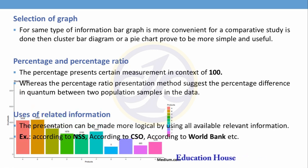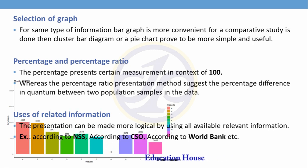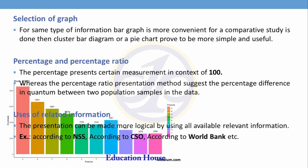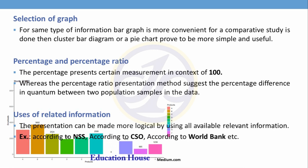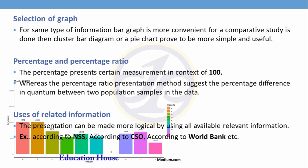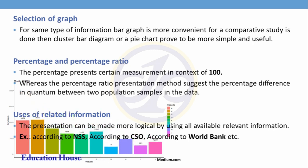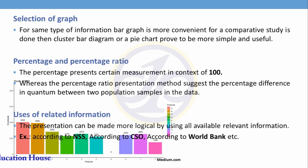For comparing two types of information, a cluster bar diagram is helpful. For more than two types of information, a pie chart or divisible bar diagram is used. Percentage represents data in the context of 100, while percentage ratio represents the difference between two percentage data.